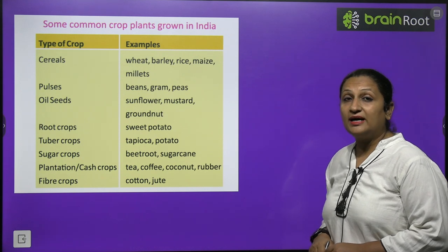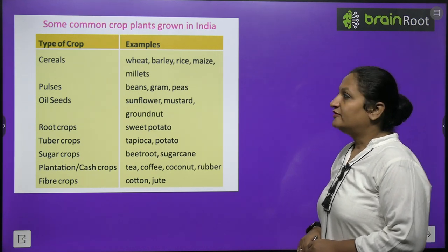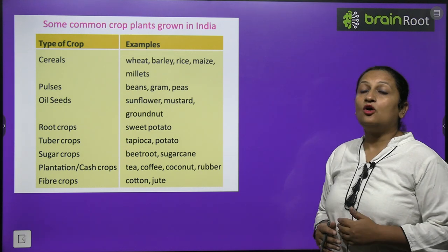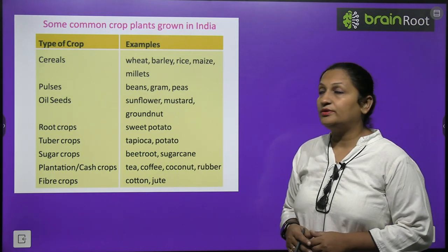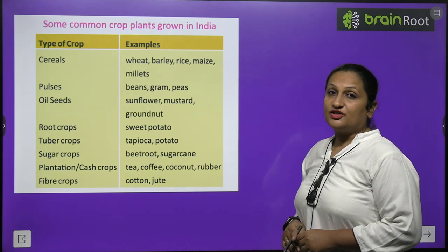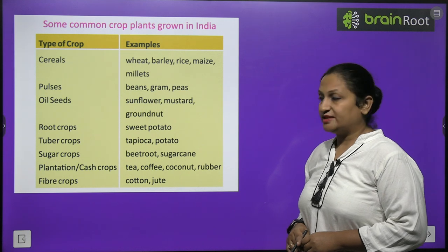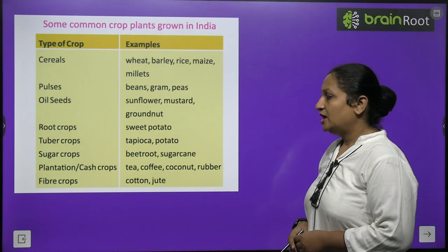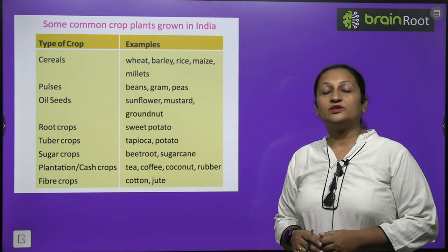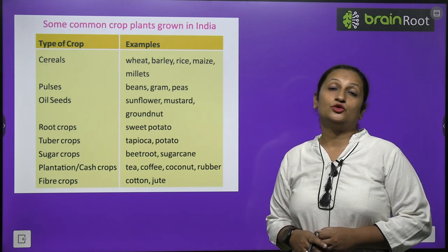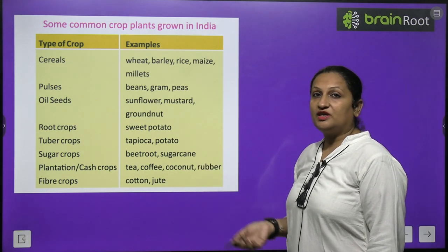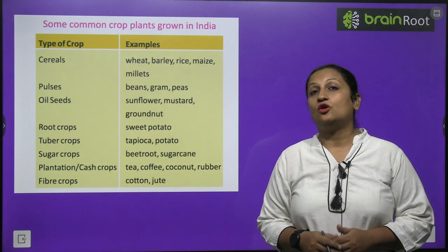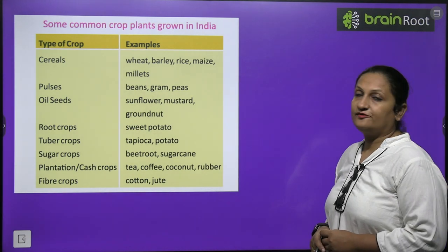Cereals include wheat, barley, rice, maize and millet. Pulses include beans, gram and peas. Oil seeds include sunflower, groundnut oil and mustard oil. Root crops include sweet potato; tuber crops include tapioca and potato. Sugar crops include beetroot and sugarcane. Plantation or cash crops — cultivated to make money — include tea, coffee, coconut and rubber. Fiber crops, from which we get fiber, include cotton, jute and flax.